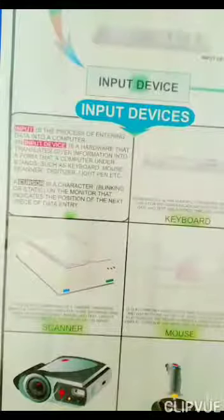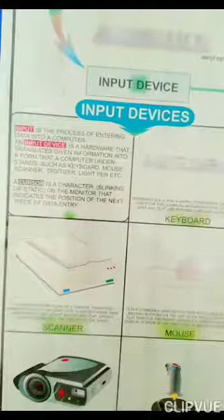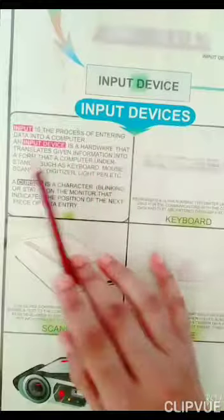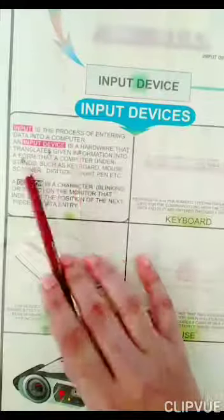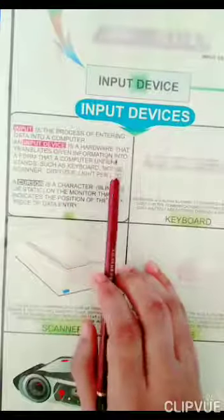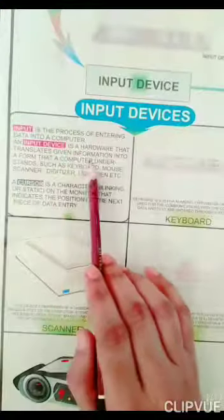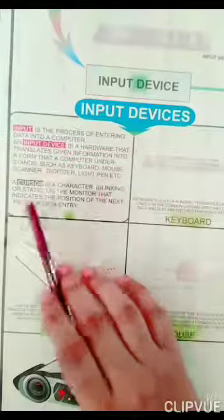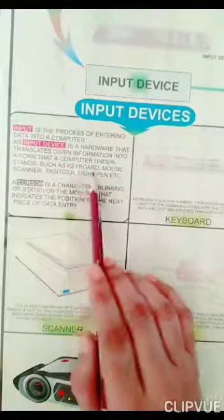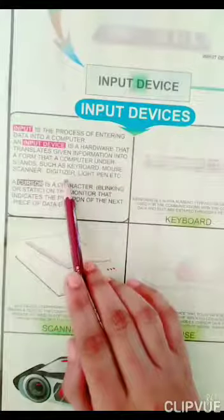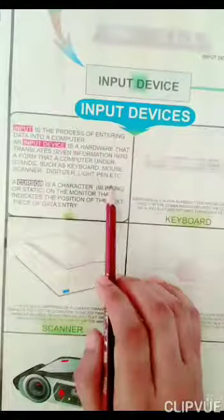Input devices. What is an input device? Input is the process of entering data into a computer. An input device is hardware that translates given information into a form the computer understands, such as keyboard, mouse, scanner, digitizer, light pen, etc.